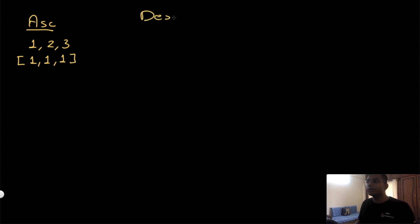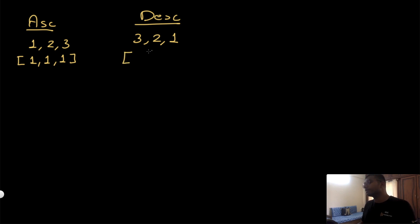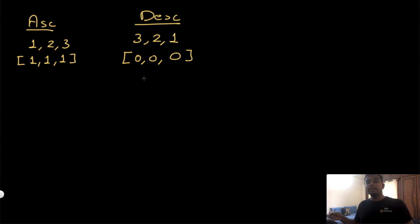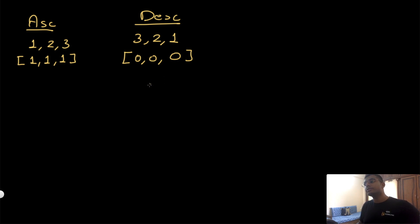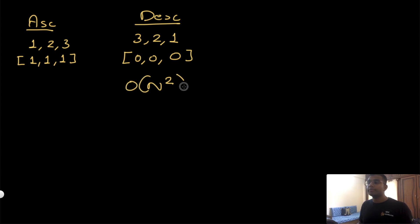The brute force solution is not always going to work. Let's look at the opposite condition where we have descending numbers: 3, 2, 1. The result is going to be all 0s because there is no day that comes after a certain day with a higher temperature. In the descending case, our brute force solution is O(n²) because we have to check all n numbers after each element. This is why the brute force solution is bad.